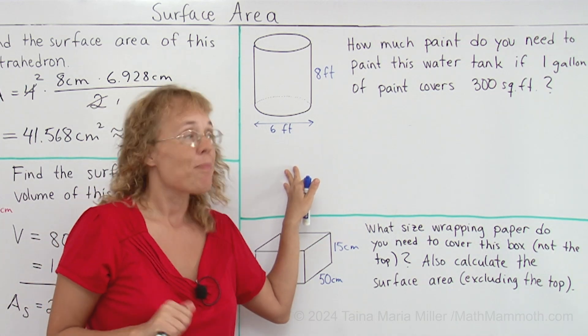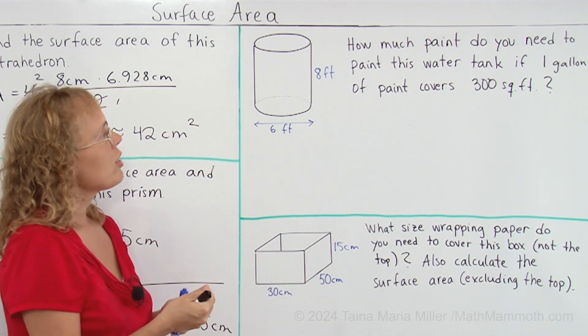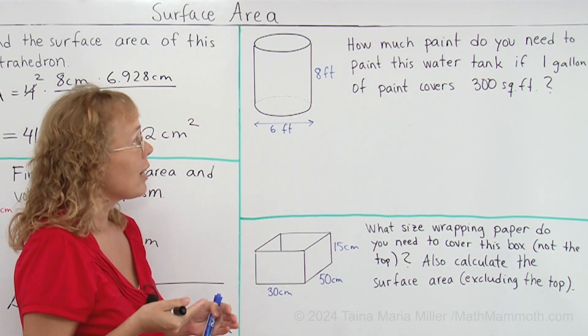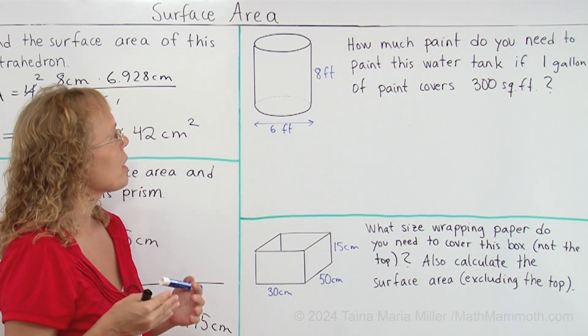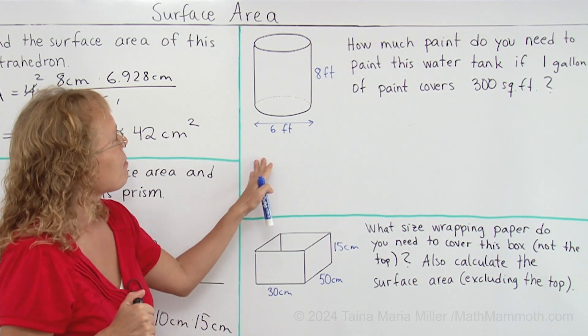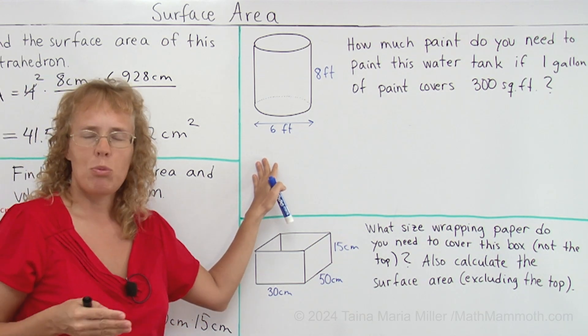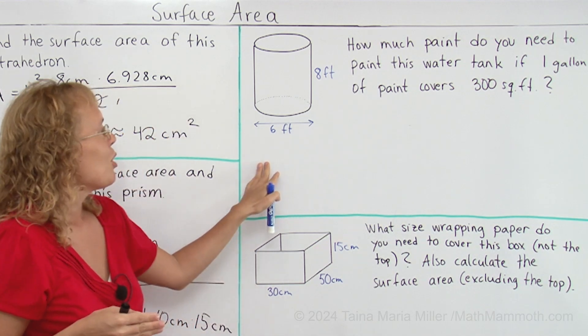Over here we have a cylinder and how much paint do you need to paint this water tank if one gallon of paint covers 300 square feet? Now if you think about painting this water tank you are most likely not gonna paint the bottom right.